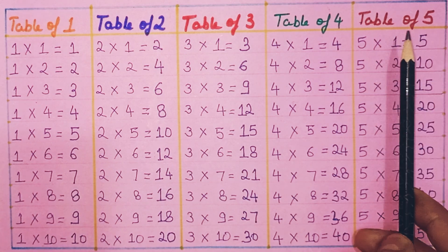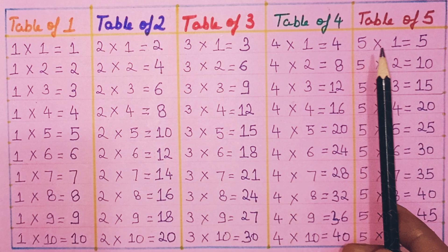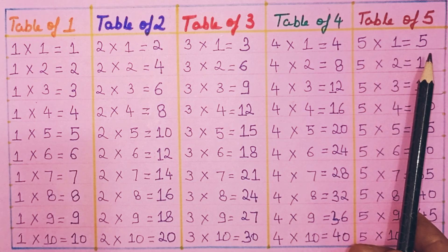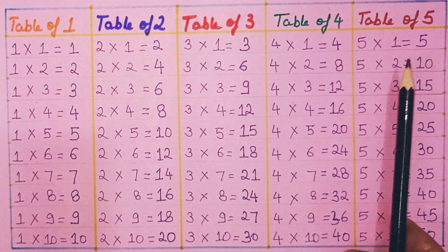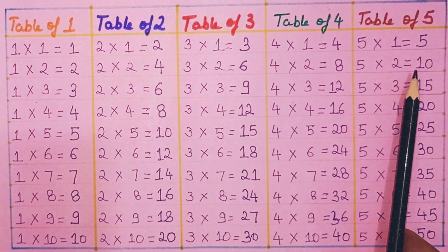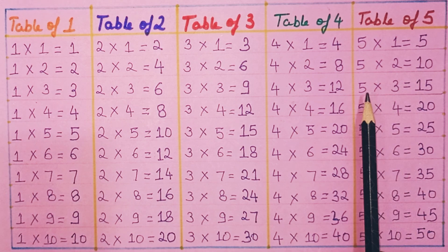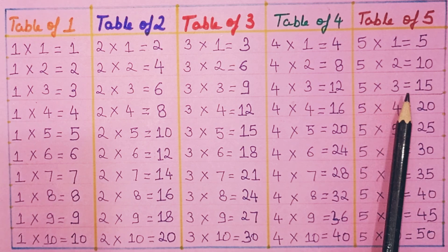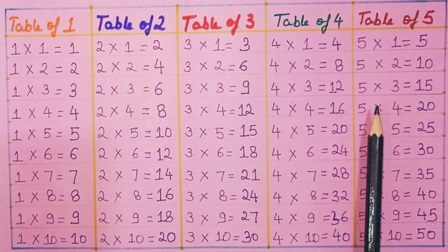Table of Five. Five ones are five. Five twos are ten. Five threes are fifteen.